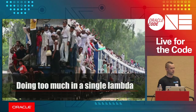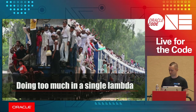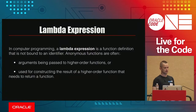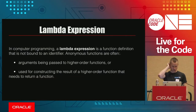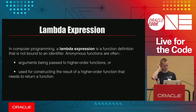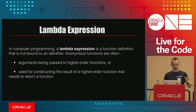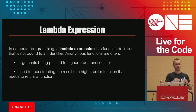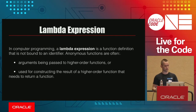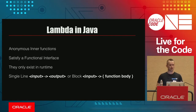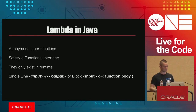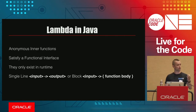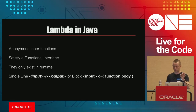The first mistake is doing too much in a single lambda. What is a lambda? Simply put, a lambda function is a higher-order function — you can give a function as a parameter to a function, or create a function that returns a function. Most of the time in Java it's like an anonymous inner function. It satisfies the functional interface, and you can write them two ways: as input, a function arrow, and an output; or with a complete function body.